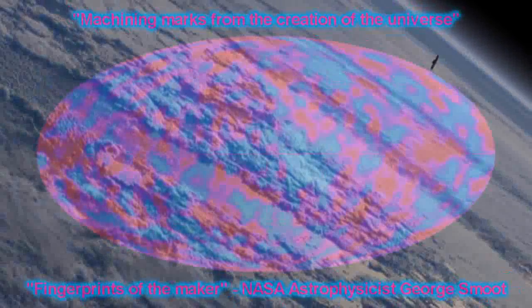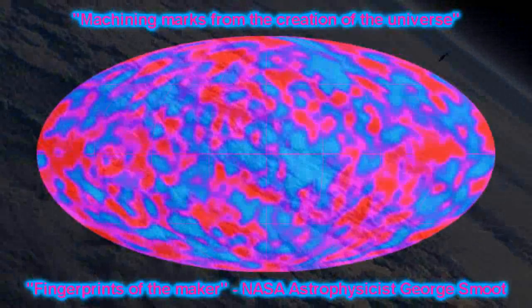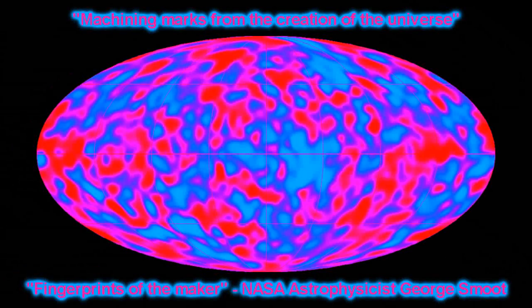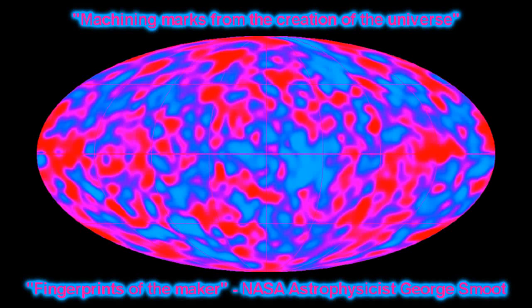Any slight variation one way or the other, and none of us would be here to tell about it. In fact, the ripples are so exact, down to one part in 100,000, that COBE project leader George Smoot called them the machining marks of the creation of the universe, and also the fingerprints of the maker.